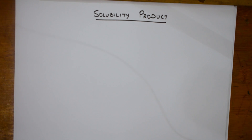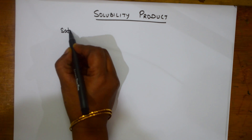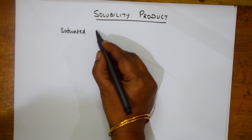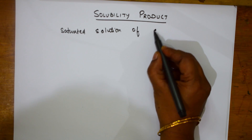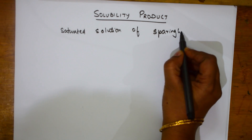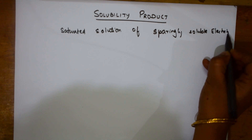Let us come back and start with the next important topic of equilibrium, that is solubility product. We will understand this concept and start doing some numericals based on this from 2002 to 2016. Now, what actually is solubility product? I am going to take a saturated solution — specifically, a saturated solution of a sparingly soluble electrolyte.